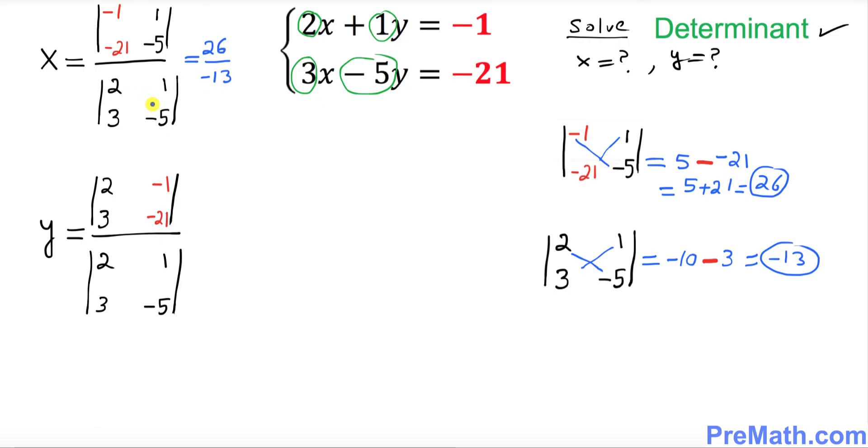Now you can see the bottom determinants are same. So we don't have to do the bottom determinant all over again. We got the value. So this has a value negative 13 as well.